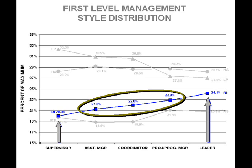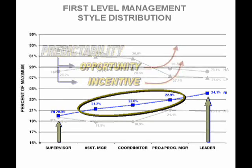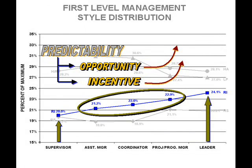Assistant managers, project managers, and coordinators are next. Each job has varying degrees of predictability, but the differences are small and statistically insignificant. The written research blog treats the distinctions within this group more thoroughly. For now, the statistics are enough to differentiate this middle group from both supervisors and leaders. The point is that predictability once again explains what the real-world data shows. At the first level, the character of the job rather than the decision horizon drives predictability — but it is predictability nonetheless.